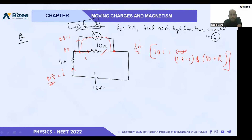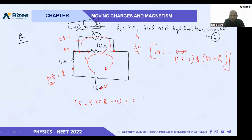For the second equation, we write KVL for the closed loop: 15 − 5 × 0.8 − 10 × i = 0. Solving this gives the value of i. Substituting i back into the parallel voltage equation, we can find the value of Rs.